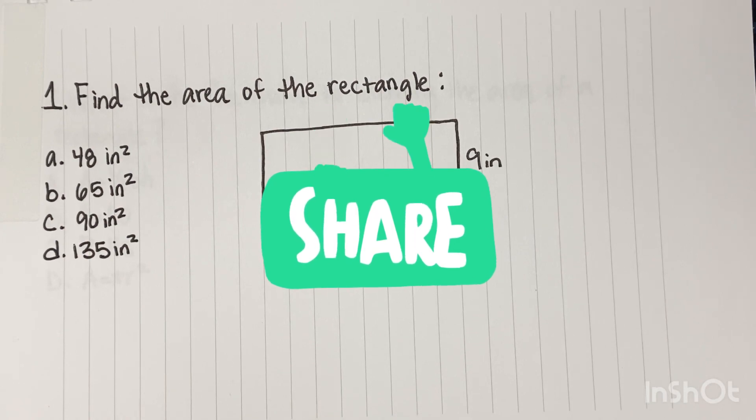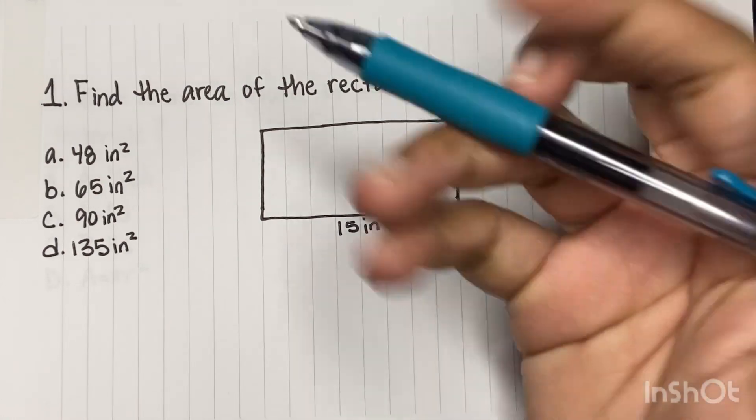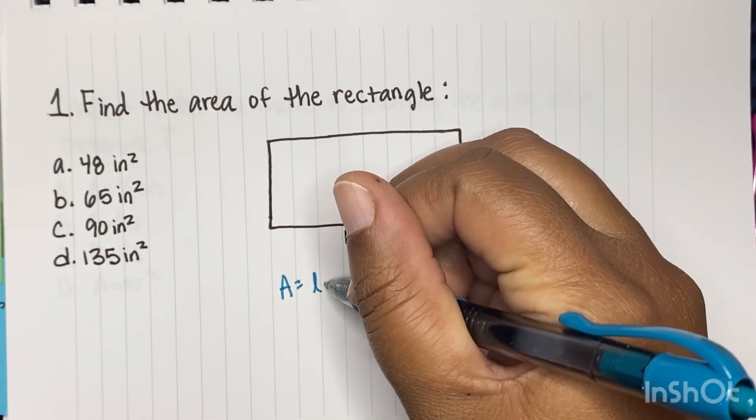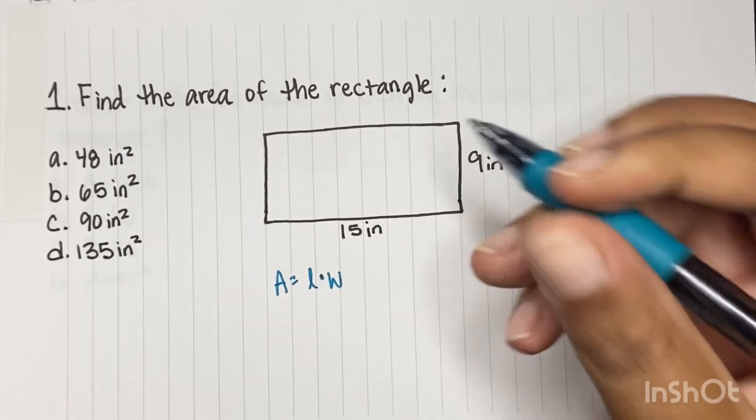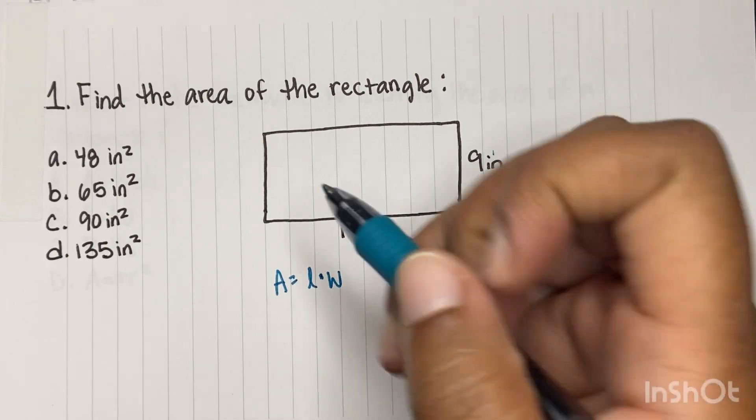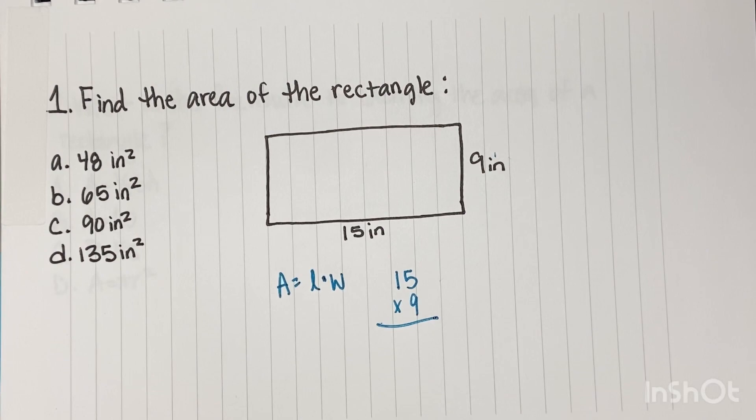So we don't get to use calculators on the ASVAB. So for finding the area, remember area is length times width, okay? So what we have to do is multiply these two numbers. So we have to do 15 times 9, okay?